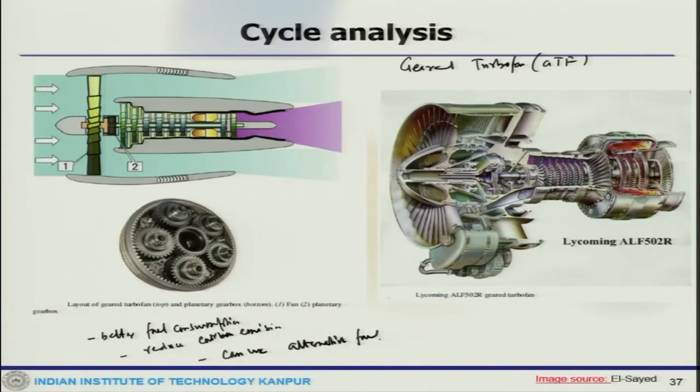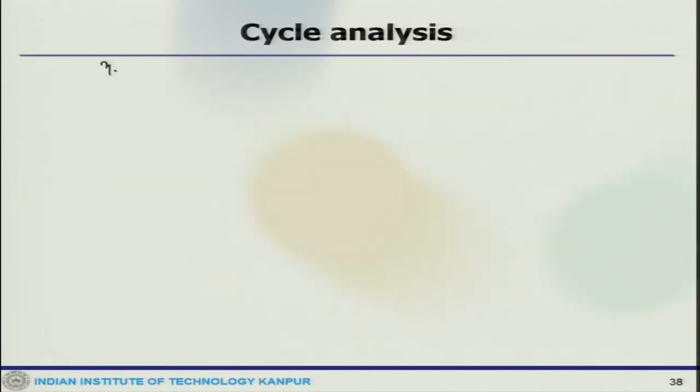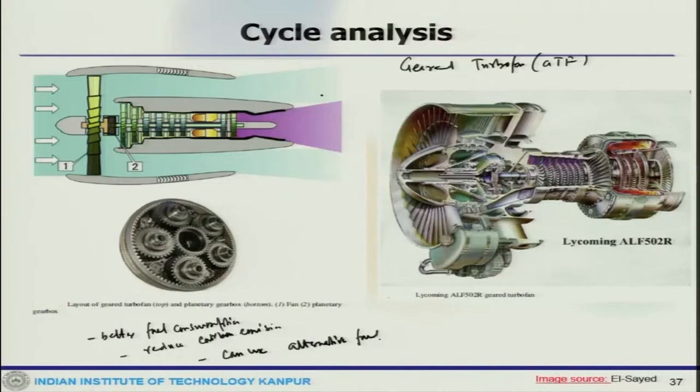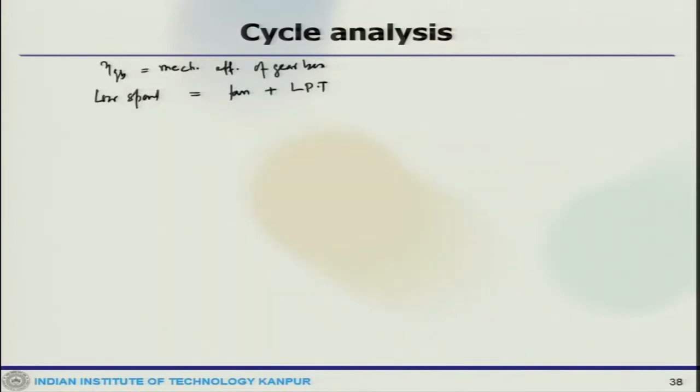Concerning thermodynamic analysis of this gear turbofan, if eta_GB is the mechanical efficiency of the gearbox, then the low spool is composed of fan and turbine. At low spool, this has fan plus LPT. The fan states are 2 and 3, and LPT states are 6 and 7. By continuous numbering, the energy balance gives: (1+beta)*(M_dot_A)*(Cp_c)*(T03-T02) = eta_gearbox * lambda_1 * eta_M1 * M_dot_A * (1+F-B) * Cp_H * (T06-T07), where B is M_dot_B/M_dot_A, the bleed air.